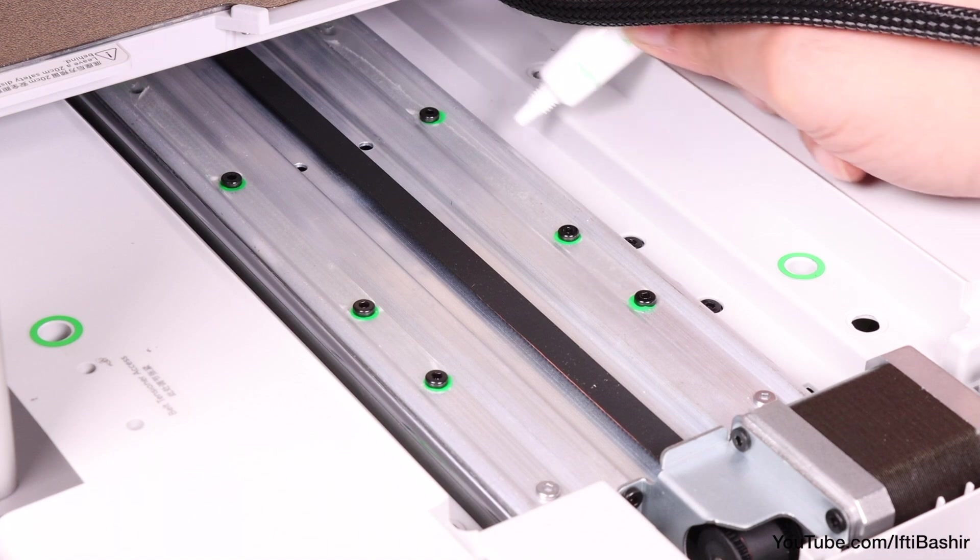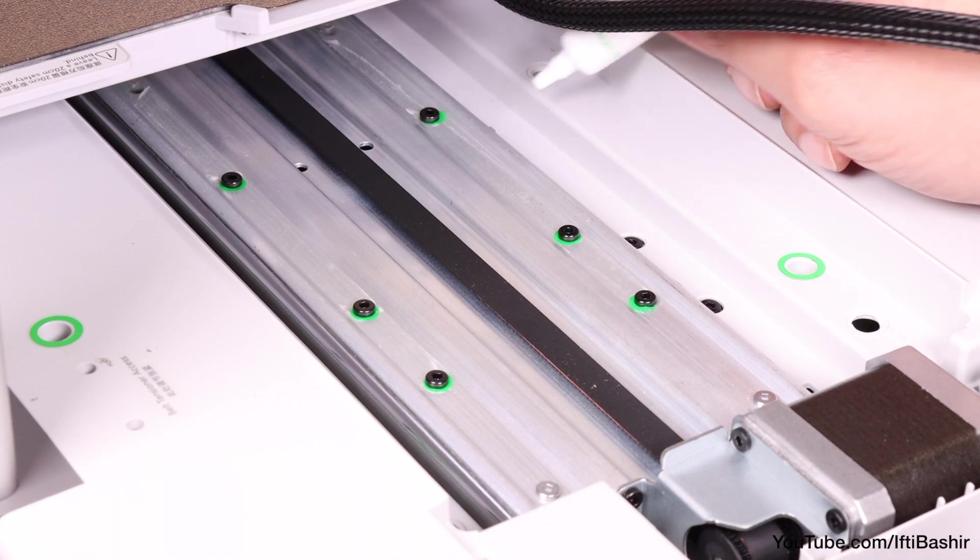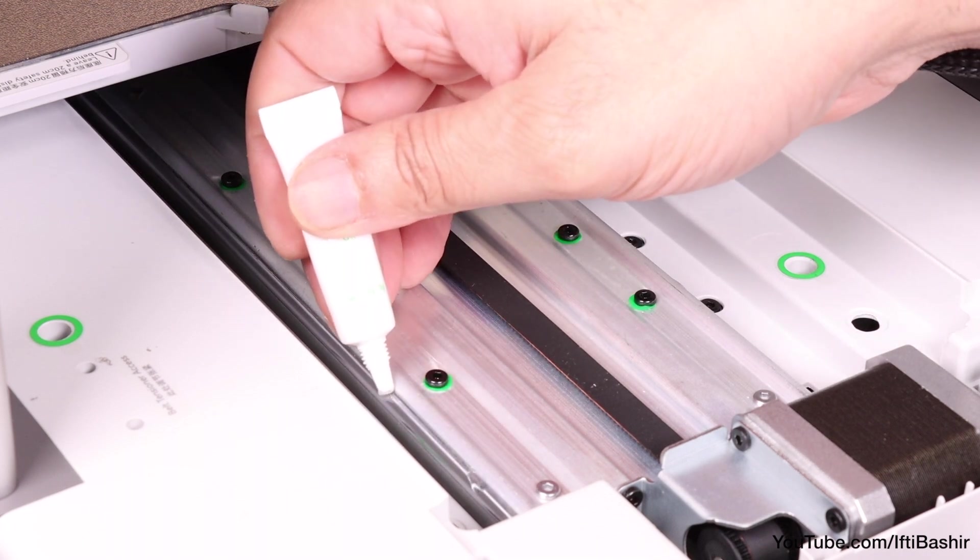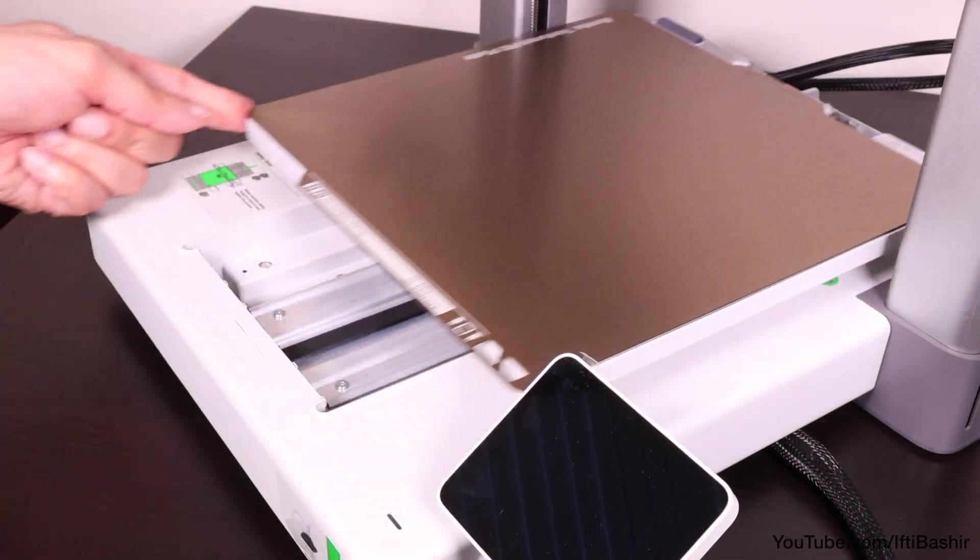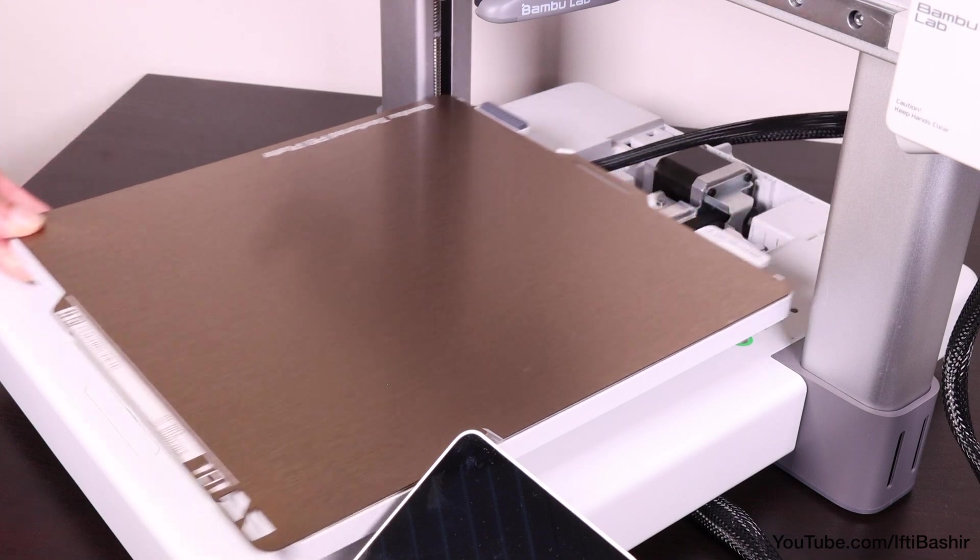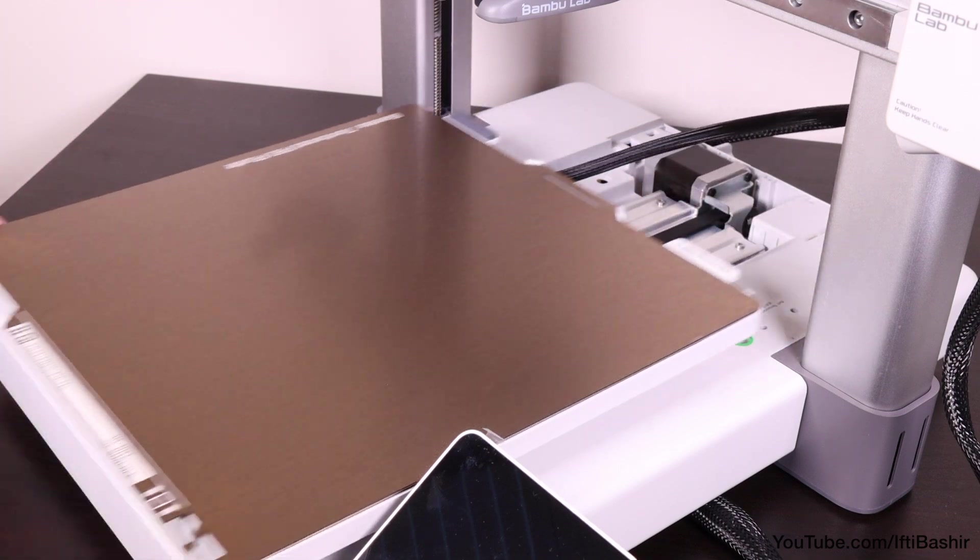So with that to hand, proceed to apply a few drops along the sides of the rail. Just a very small amount. No need to go crazy with application here. Before moving the bed to the rear, and applying a few drops to the front end, after which we can move the bed back and forward a few times to help spread that oil around.